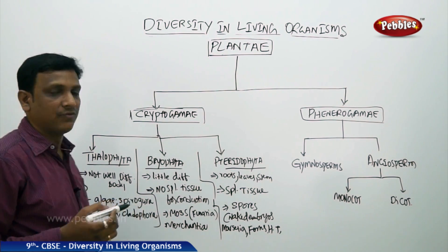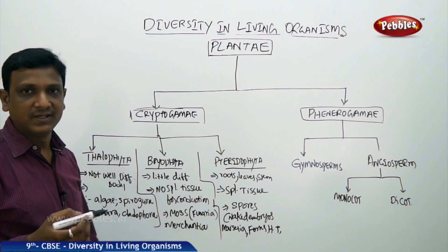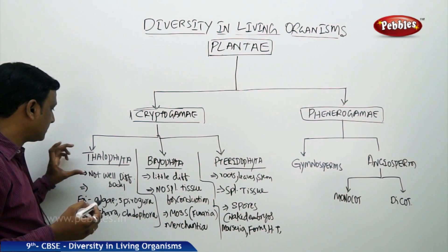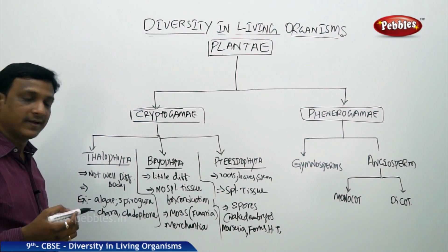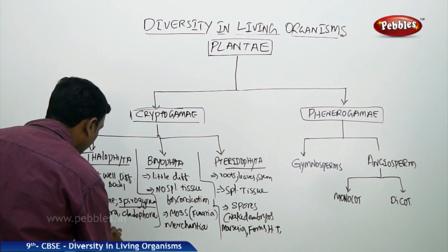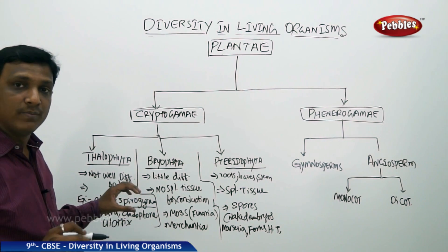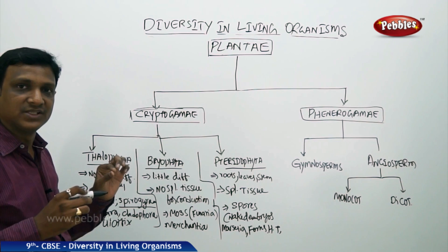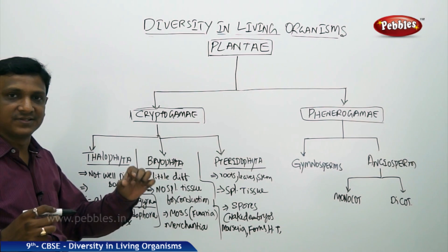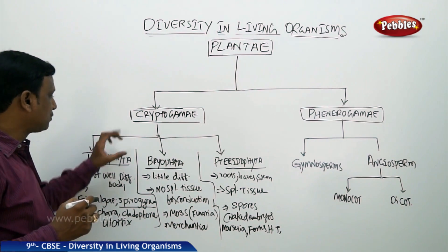Multicellular algae comes under Thallophyta, whereas in Protista we studied unicellular algae. But multicellular algae come under Thallophyta. Examples include Spirogyra filaments, which you can find in water tanks and observe under a microscope. Those green filamentous structures are the multicellular algae which fall under Thallophyta.